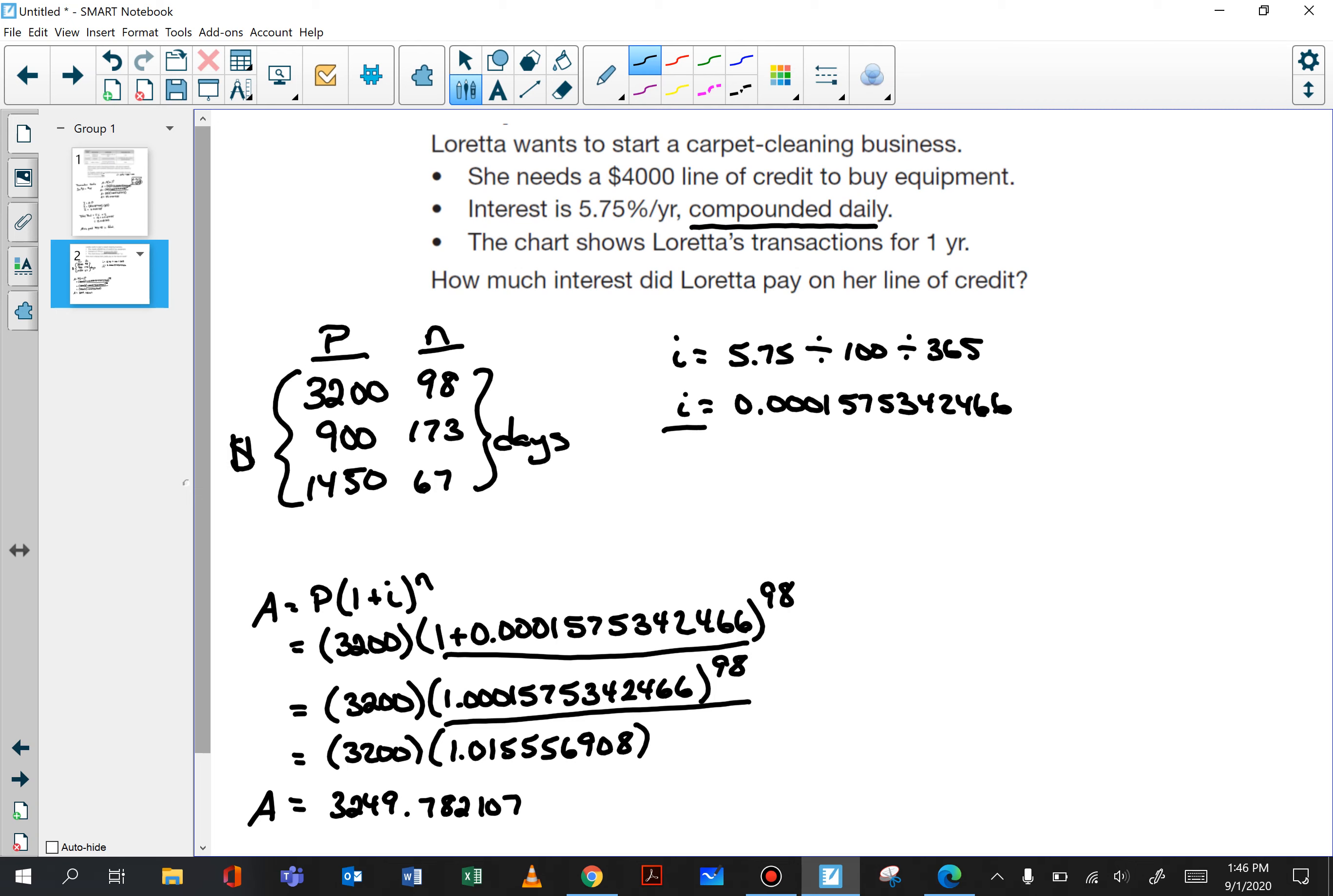So if we want to know the amount of interest on this transaction, once again A equals P plus I. We know the total amount, we can subtract P. A minus P equals I. So here's our A value that we just calculated and we're going to subtract P which is 3,200. So I equals 49.782107.